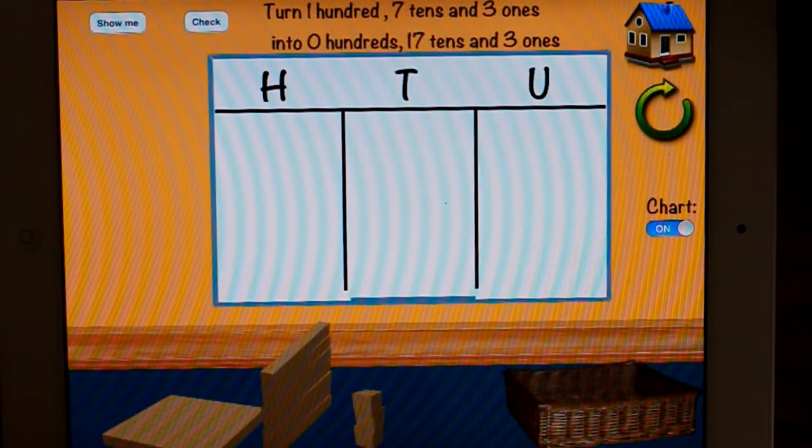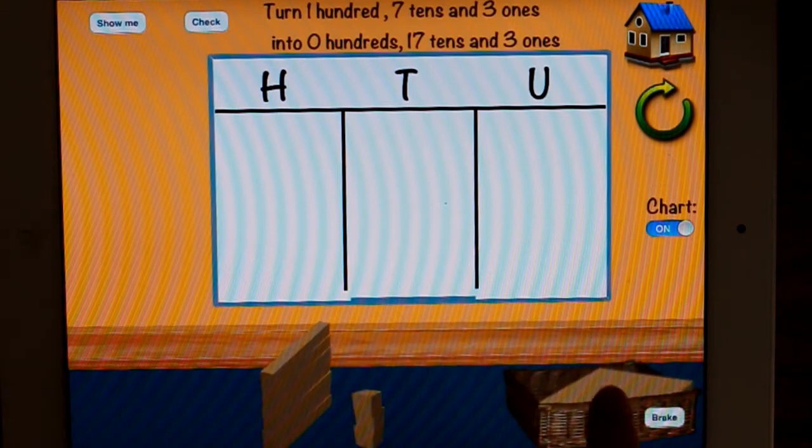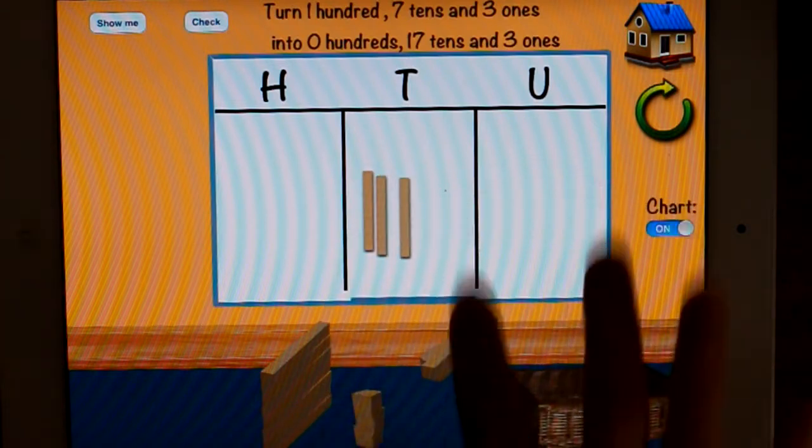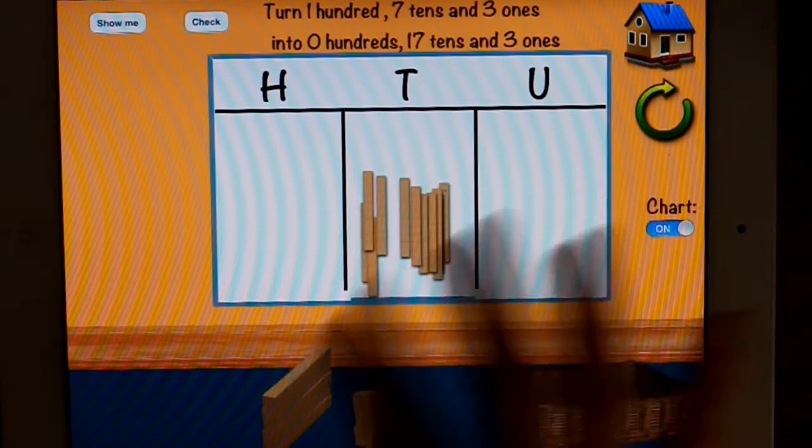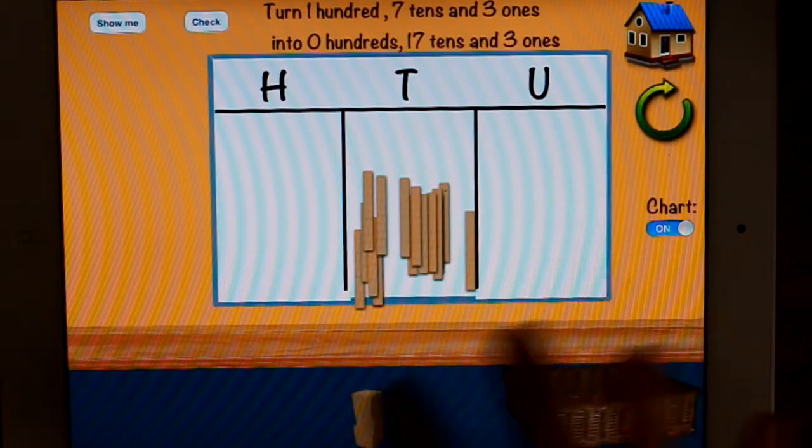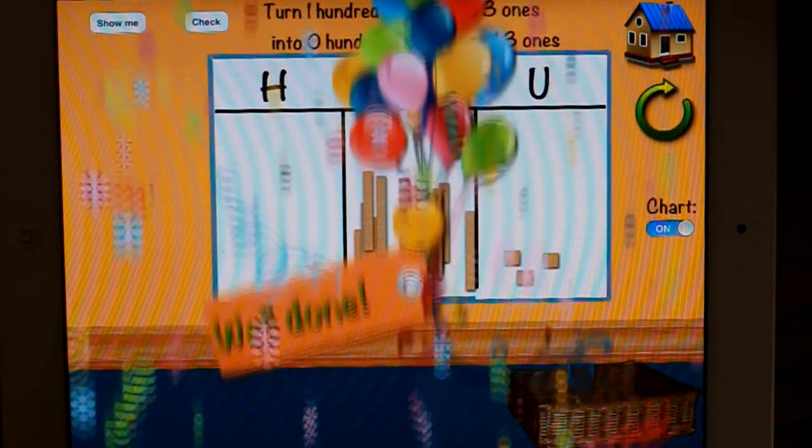Alright, so turn one hundred seven tens into zero hundreds seventeen tens and three ones. So, obviously I need to turn the hundreds into seventeen tens and I'm going to break it and then I'm going to put it on the board. Three, four, five, six, seven, eight, nine, ten. It can be overlapping. Making sure that you actually put it on the board and it turns into... check. Well done.